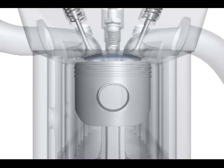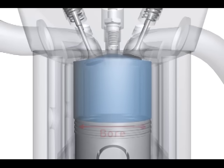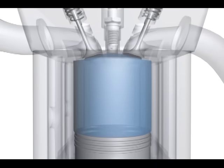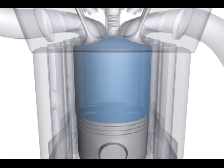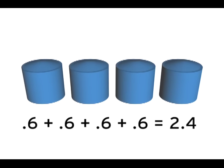Engine displacement is how the internal size of an engine is described. It's measured as the cylinder bore times the length of the piston's stroke. This is multiplied by the total number of cylinders and is usually expressed in liters or cubic centimeters. For example, a 2.4-liter four-cylinder engine has a total displacement when adding together all four cylinders of 2.4 liters.